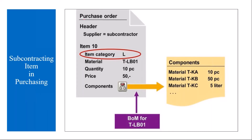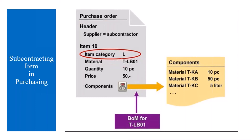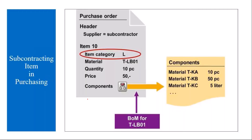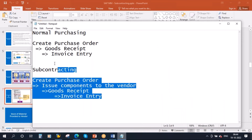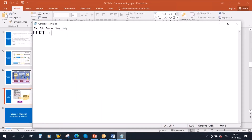Whenever you create a subcontracting PO, the only thing is you have to select item category as L (subcon). I will show you in the system. When you select item category L for subcontracting, the system will search for the BOM of that material. Along with item category you enter the material you are going to order, and the system copies the components from the BOM into the PO so you can see them. Now let's create the data — I'll select a product first.